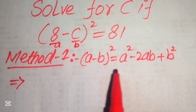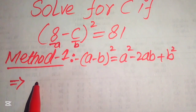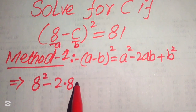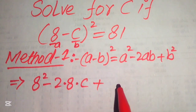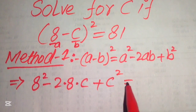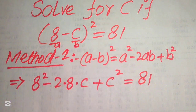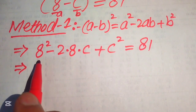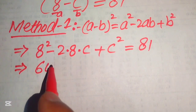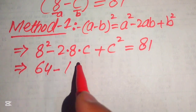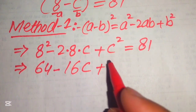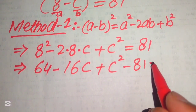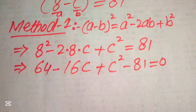Putting A equals 8 and B equals C into the formula, the equation becomes: 8 squared minus 2 times 8 times C plus C squared equals 81. So that is 64 minus 16C plus C squared equals 81. Moving 81 to the left-hand side, it becomes minus 81, giving us the equation equal to zero.